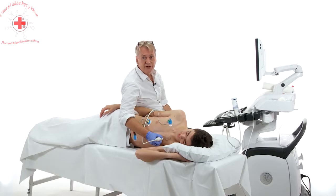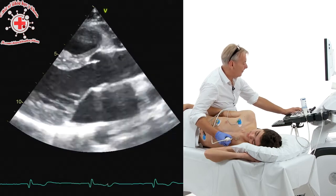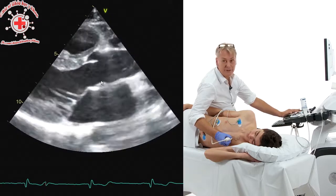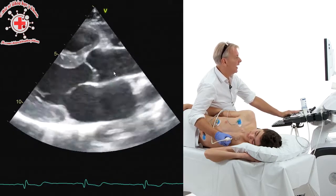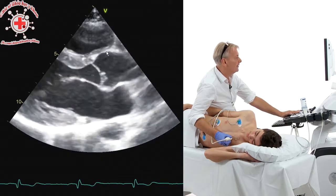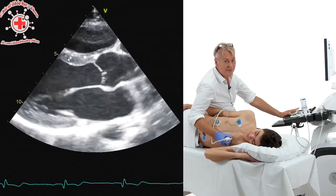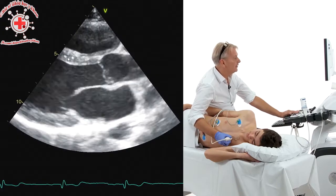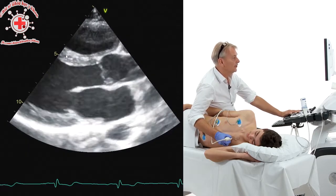Let's identify the structures you can see in a parasternal long axis view in our model. The image quality here is really superb so you can see even very detailed and small structures. We have the aortic valve — this is the right coronary cusp and this could be either the non-coronary or the left coronary cusp, depending on how we angulate the transducer. We have the ascending aorta, the right ventricle, and the myocardium. We can even see the speckled appearance in the myocardium — this is a normal ventricle, and with the high resolution of modern machines we can see the orthogonal cut of the myocardial fibers. Don't mistake this for pathology.